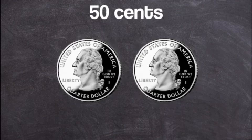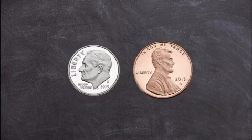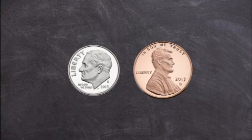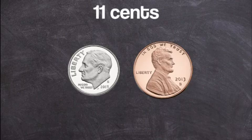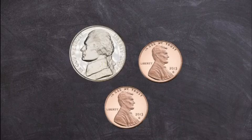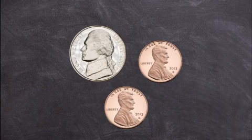If you have one dime and one penny, what's your final value? If you got 11 cents, you're correct, because one dime is 10 cents and one penny is one cent. If you have one nickel and two pennies, what's your final value? If you got seven cents, you're correct.